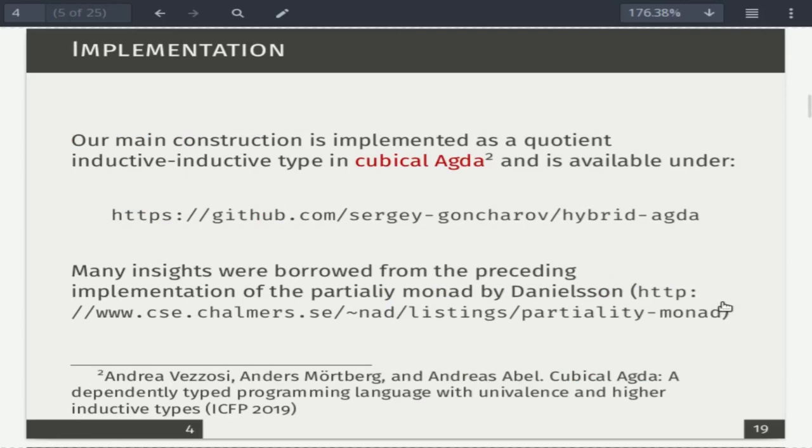A note on implementation. So since it's all constructive, the proofs are not trivial and it's important to have them formalized. We did the formalization in Cubical Agda, which is a recent implementation of cubical type theory. And that's in turn an implementation of homotopy type theory. And the implementation is available under this link. And yes, we made good use of insights of a previous formalization by Danielsson of the partiality monad.